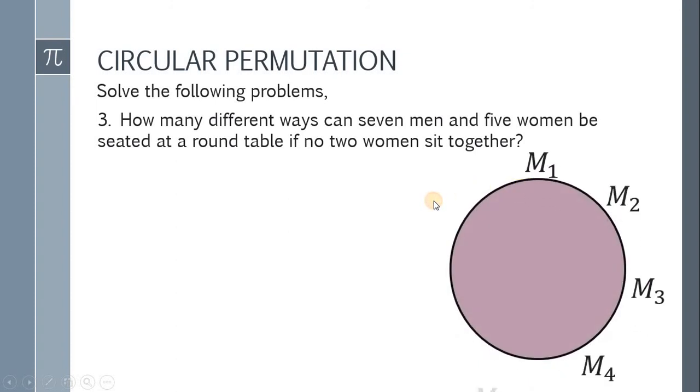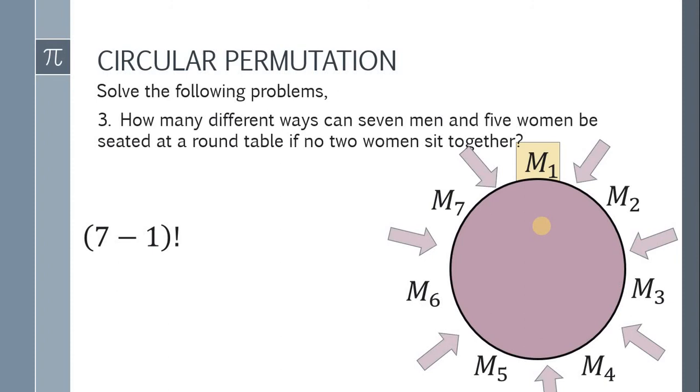Let's have a big table and ilagay natin yung seven men. We have M1, M2, hanggang M7. Ang question, how many ways natin pwede nga arrange yung seven men sa round table? Ang tendency, fix natin yung isa. Therefore, we have seven minus one factorial different ways. Yung goal natin, hindi magkakatabi yung five women. Ang tanong, saan sila pwedeng maupo? And the answer ay dun sa pagitan ng bawat men.